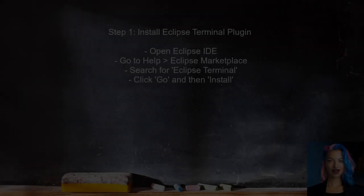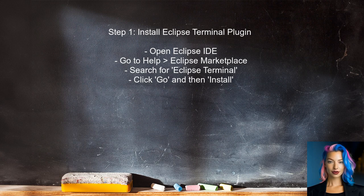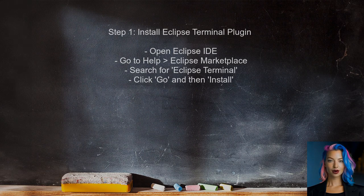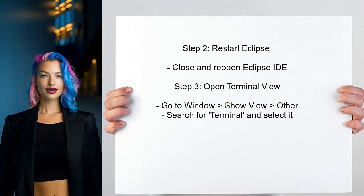To run a system shell inside Eclipse, the user should first install the Eclipse Terminal Plugin. This plugin allows users to access a terminal directly within the Eclipse IDE. After installing the plugin, the user needs to restart Eclipse to activate it.